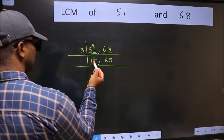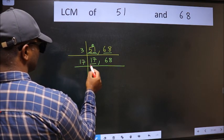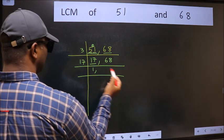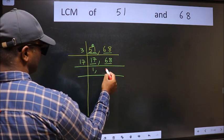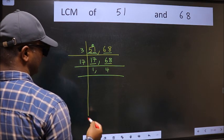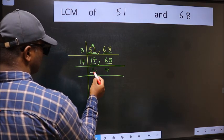Now we have 17. 17 is a prime number, so 17 times 1 is 17. The other number is 68. When do we get 68 in the 17 table? 17 times 4 is 68.